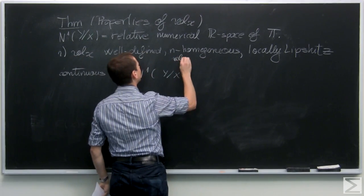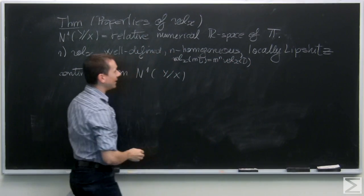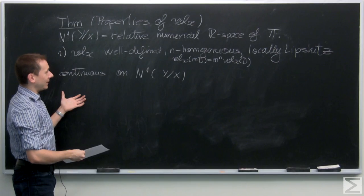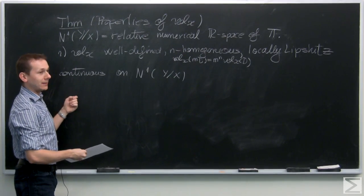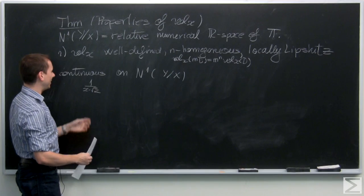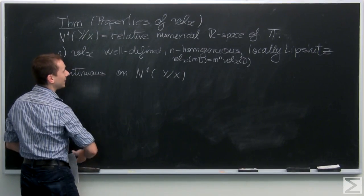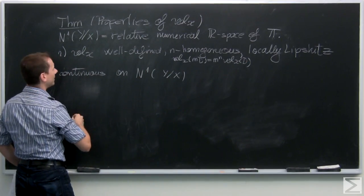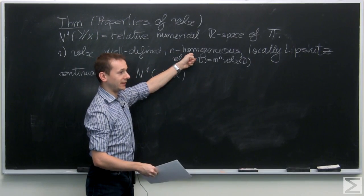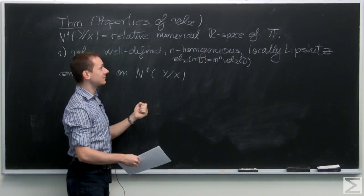Well-defined means it's independent of the numerical class: if two divisors are relatively numerically equivalent, the local volume is the same. Homogeneous means vol_x(mD) = m^n · vol_x(D). Local Lipschitz continuity is the condition needed to say that if a function is continuous on rational numbers, it extends continuously to real numbers — like 1/(x - √2) which has no problem on rationals but cannot be extended continuously at √2. So, given the definition for Cartier divisors, using homogeneity we define it for rationals, and using Lipschitz continuity we extend to real classes.